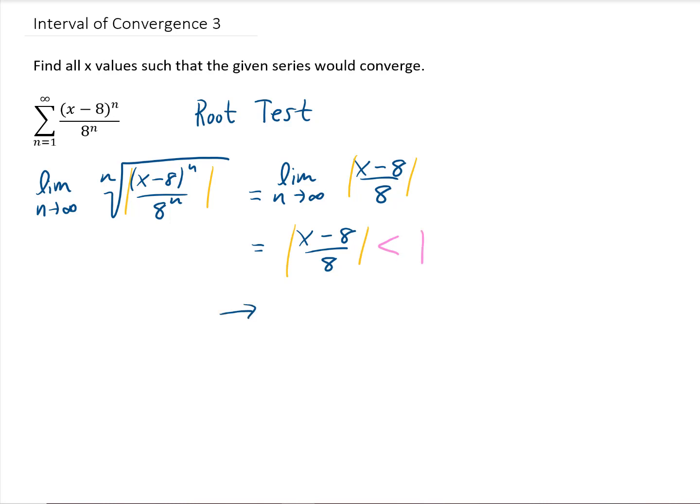Well that just means that we have an inequality to solve. We have the absolute value of x minus 8 is less than 8 if we multiply both sides of this inequality by 8. Then we can make this a compound inequality, add 8 to every piece of this inequality, negative 8 plus 8 is 0, 8 plus 8 is 16.